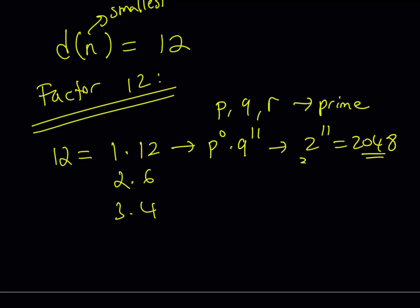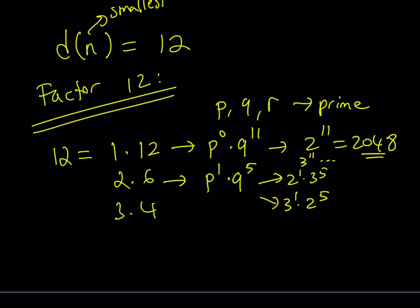Using 3¹¹ would be even larger, so don't go there. Now take the factoring 2×6: decreasing each by 1 gives exponents 1 and 5, so n = P¹ × Q⁵. An important fact: use the smaller prime with the larger exponent to keep the number smaller. So 2¹ × 3⁵ = 2 × 243 = 486, but 2⁵ × 3¹ = 32 × 3 = 96 — much better. Can we improve further? Let's check the 3×4 factoring.